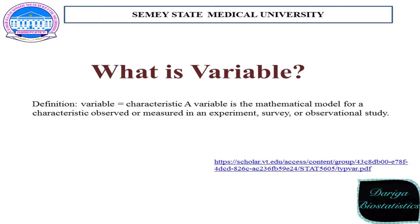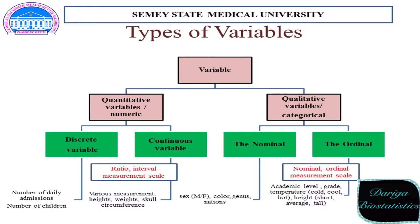What is a variable? Variable is a mathematical model for characteristics observed and measured in an experiment, survey, or observational study. In a questionnaire, a variable is a question. Or in an experimental study like a randomized clinical trial, you choose two groups – giving one group a drug and the other group a placebo – and compare changes in blood pressure between the two groups. In this case, the variable is blood pressure, and after analyzing all results you can conclude how the drug influences blood pressure.